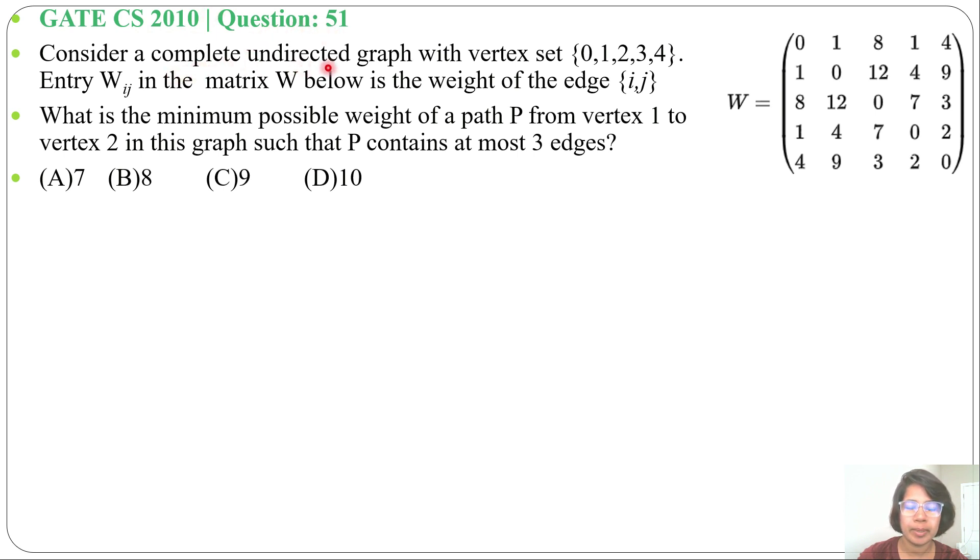Consider a complete undirected graph with vertex set {0,1,2,3,4}. Entry W_ij in the matrix W below is the weight of the edge ij. What is the minimum possible weight of a path P from vertex 1 to vertex 2 in the graph such that P contains at most three edges? This is the weighted matrix and four options are given.